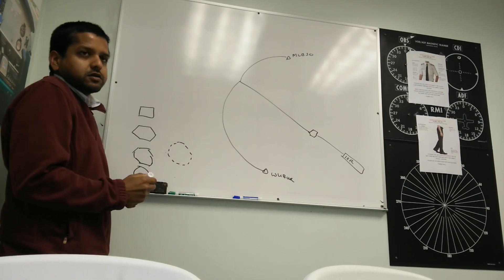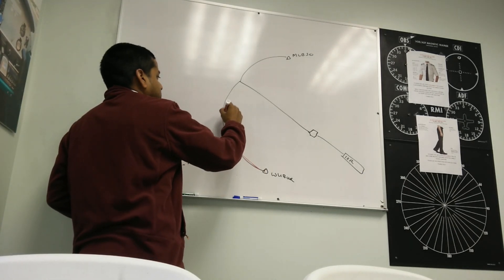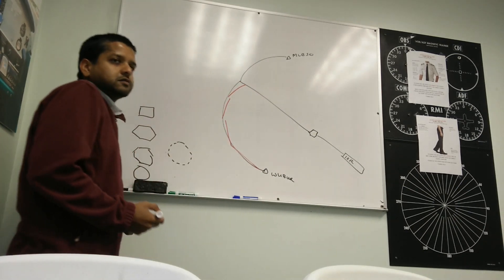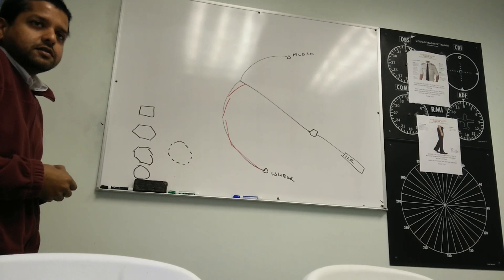When you fly an arc, you're not really flying a circle. Instead, you're flying straight lines. Do you understand that? Yes.